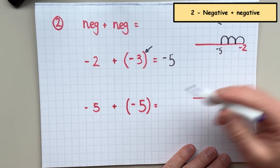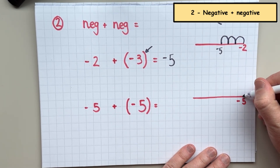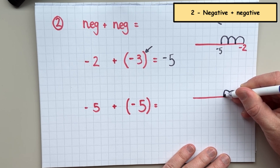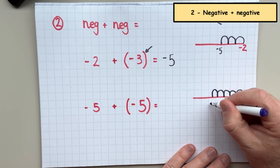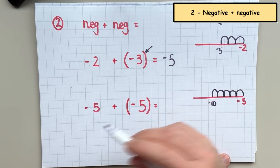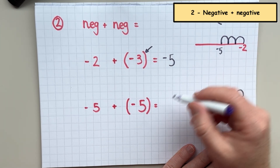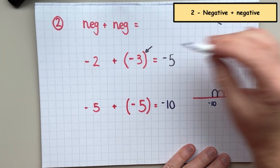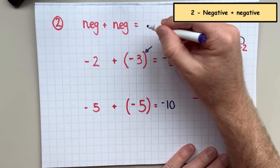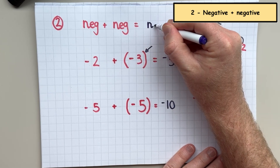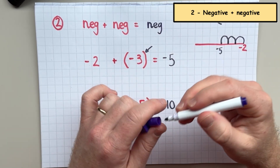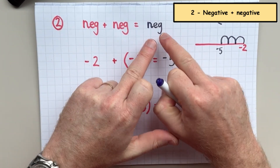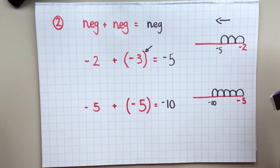Here we've got negative five and we're going to add negative five. So we go: negative six, negative seven, negative eight, negative nine, negative ten. So again, I'm adding two values together but the number is getting smaller. When you add two negative numbers together, you always get a negative answer. So if you've added two negative numbers and got a positive answer, you have done something wrong.